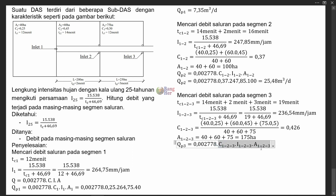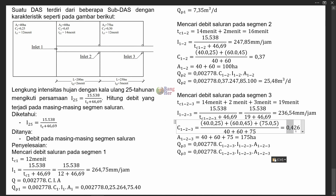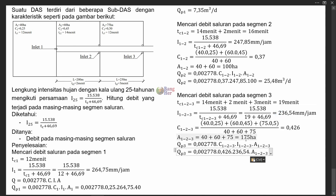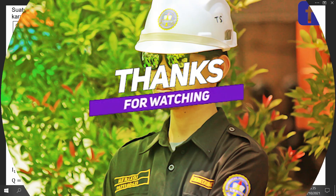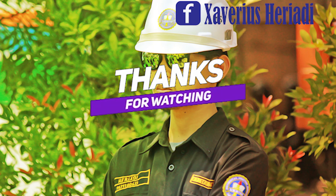I sudah diketahui, C sudah diketahui, dan A sudah diketahui. Kita bisa mencari debit pada segmen 3 dengan persamaan yang sama. C = 0,426, I = 236,54 mm/jam, A = 175 hektare. Kalau dihitung, kita akan memperoleh debit sebesar 48,98 m³ per detik. Sekian penyelesaian soal ini, sampai jumpa di video selanjutnya.